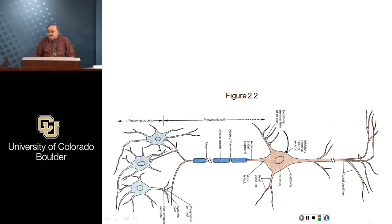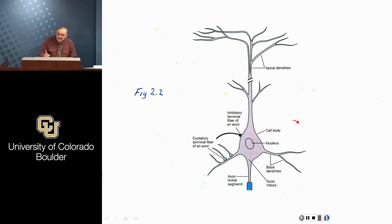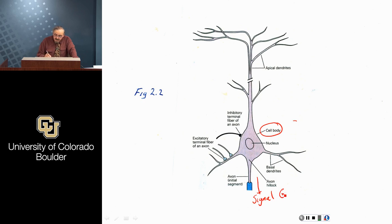Our main focus was to look at the structure of a typical neuron. A neuron has a central cell body, and from the cell body various arms and legs, so to speak, come out.